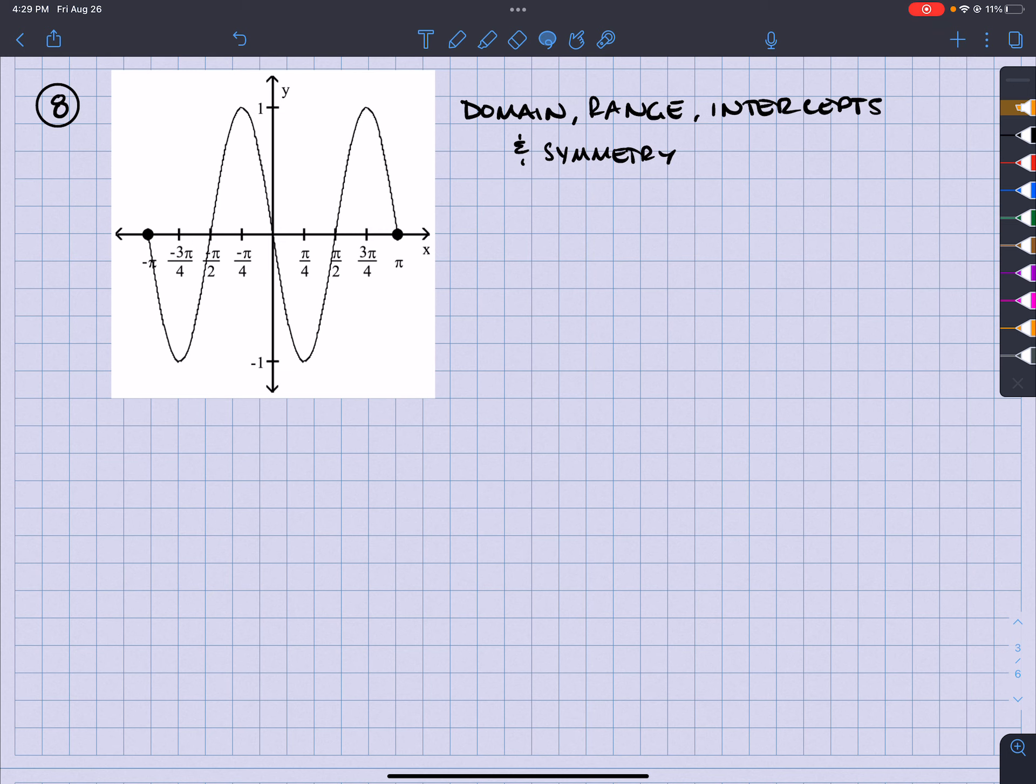So the domain is all the possible x values. And this is a closed interval because you see that there's a dot there and a dot there. So this is just a closed interval, right? So all the x values from here all the way to here are included. So in terms of my domain, I'm going from negative π to positive π, and it includes π.